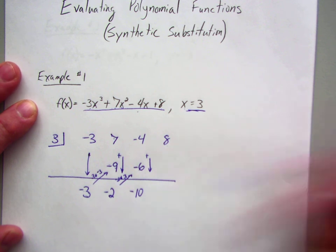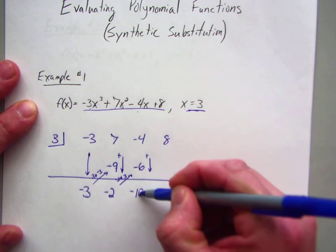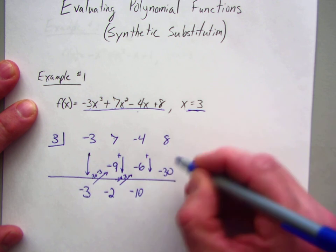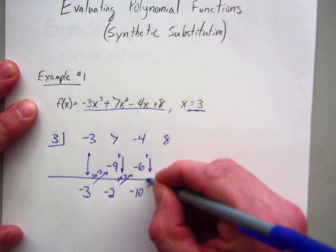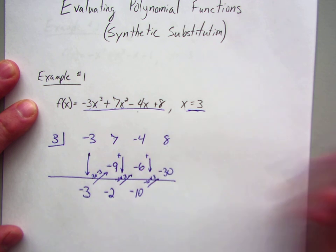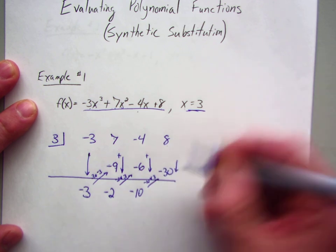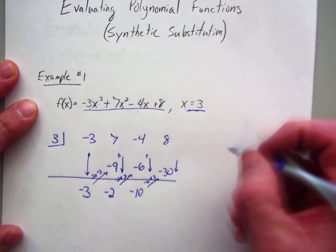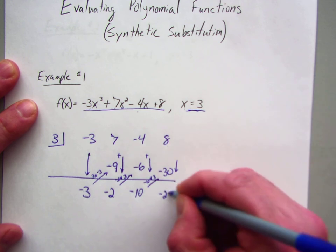Then I do the process again. So negative 10 times 3 is negative 30. So I did negative 10 times 3. Then I add going down.